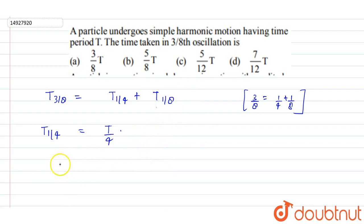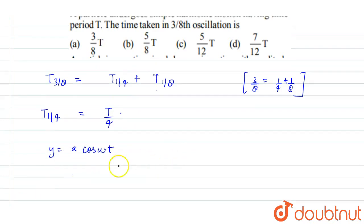Suppose that if amplitude is a, then we can write that y = a cos(ωt). Now for 1/8 oscillations, the displacement y will be equal to a/2. If this is the extreme position and this is the mean position, then amplitude is a.